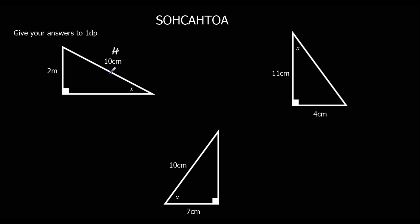Okay, so H here, O here, A here. A's by himself. So, we don't use A, we use SOH. So, sin theta, sin of the angle equals opposite over hypotenuse. In this example, sin x equals 2 over 10. And to get x away from sin, we shift sin.